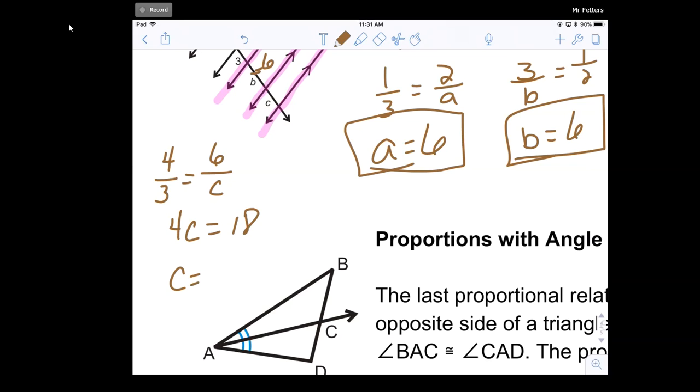Divide both sides by 4, and I get 18 over 4. Now that can reduce, divide both by 2, that reduces to 9 divided by 2. So I can leave it as a fraction, 9 over 2, or I can just do it as a decimal, which is 4.5. And so that is what C is.